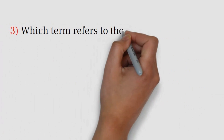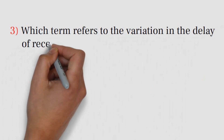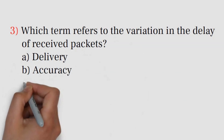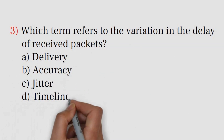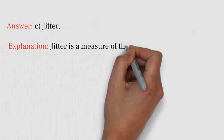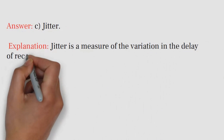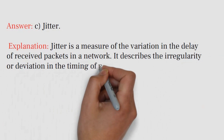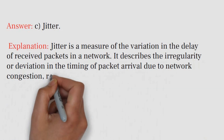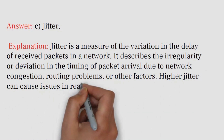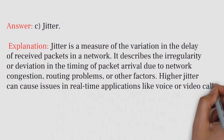Question number three: Which term refers to the variation in the delay of received packets? A) Delivery, B) Accuracy, C) Jitter, D) Timeliness. Answer: C) Jitter. Explanation: Jitter is a measure of the variation in the delay of received packets in a network. It describes the irregularity or deviation in the timing of packet arrival due to network congestion, routing problems, or other factors. Higher jitter can cause issues in real-time applications like voice or video calls.